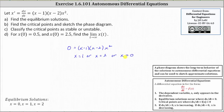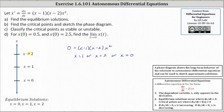This also indicates the critical points are the points on the x-axis where x equals zero, x equals one, and x equals two. To begin the phase diagram, we sketch the x-axis or vertical axis and then mark off the location of the critical points, which again are where x equals zero, x equals one, and x equals two.